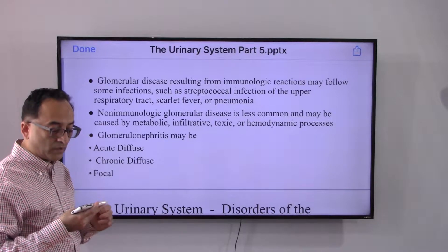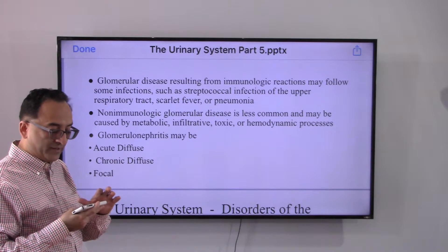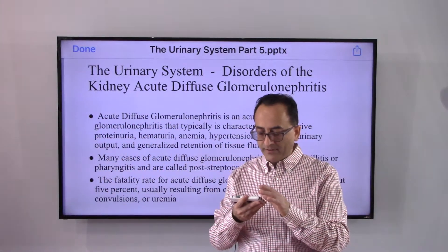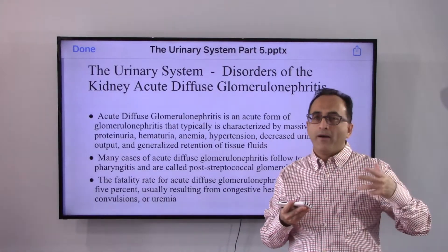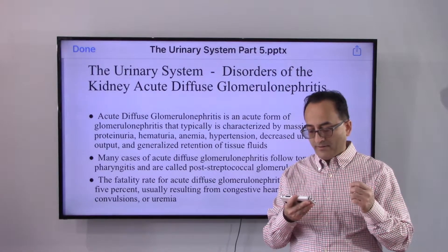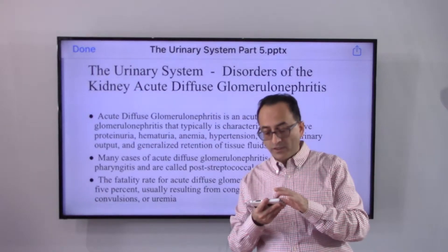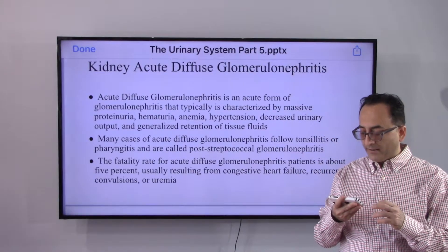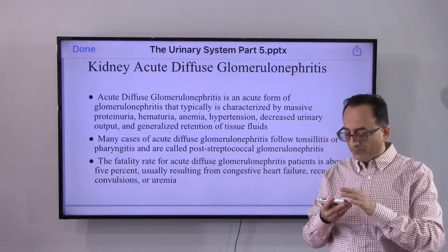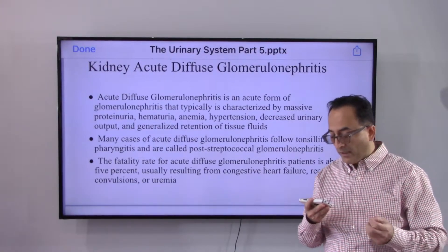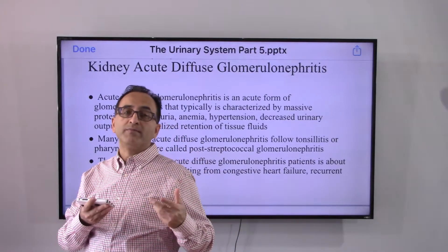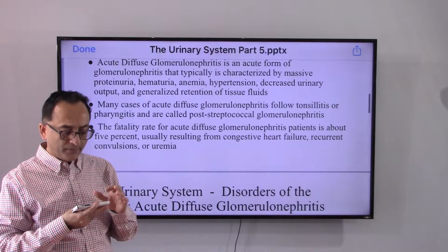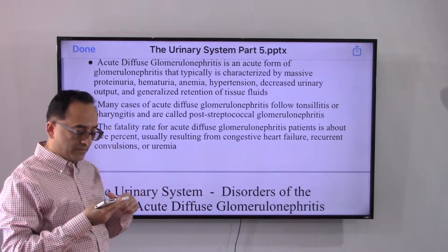This disease can have acute, chronic, or focal forms. The acute form is characterized by massive protein in the urine, blood in the urine, anemia, hypertension, decreased urinary output, and generalized retention of tissue fluids. It may follow inflammation in the tonsils — pharyngitis — and when it does, it is called post-streptococcal glomerulonephritis. The fatality rate for the acute version is about 5%.